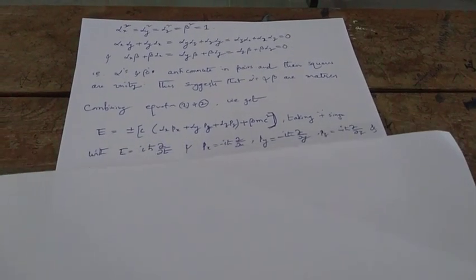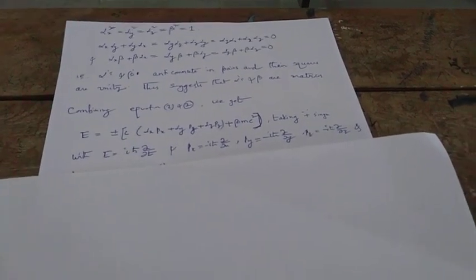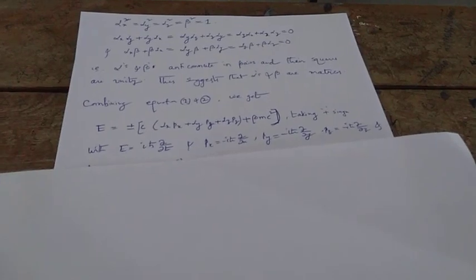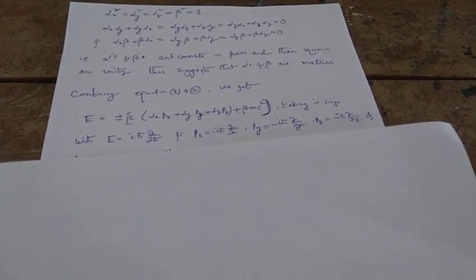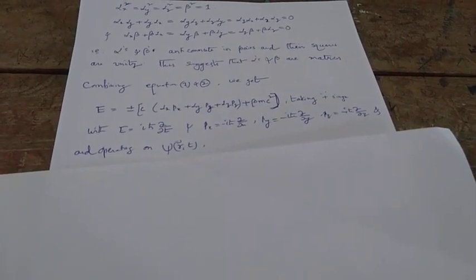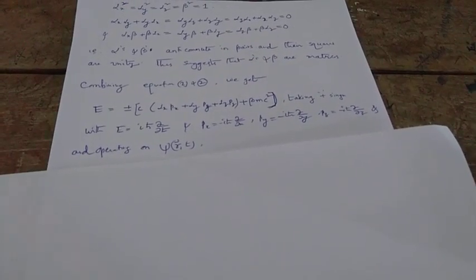Replace E with iℏ ∂/∂t, pₓ with -iℏ ∂/∂x, and similar operator forms for pᵧ and pᵤ into the above equation. Then operate the thing on some wave function ψ(r,t), and we can write this equation.